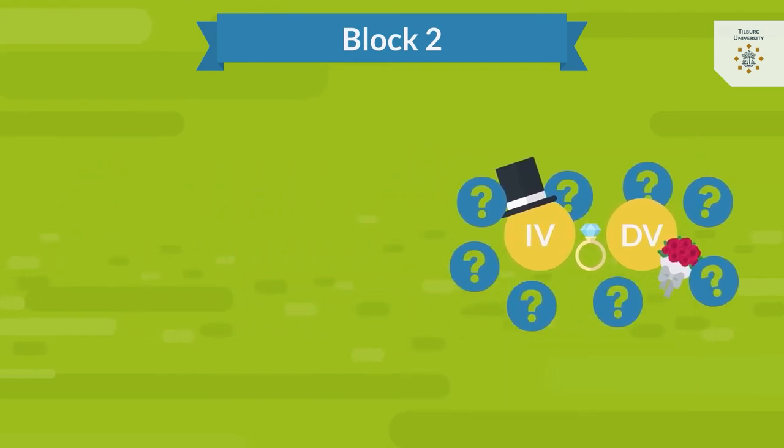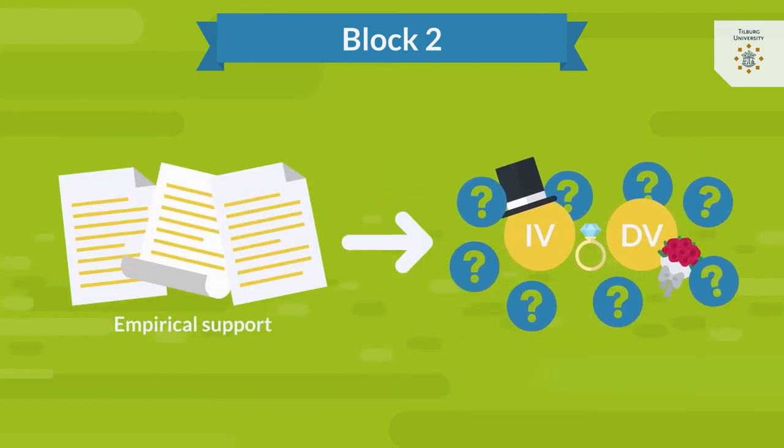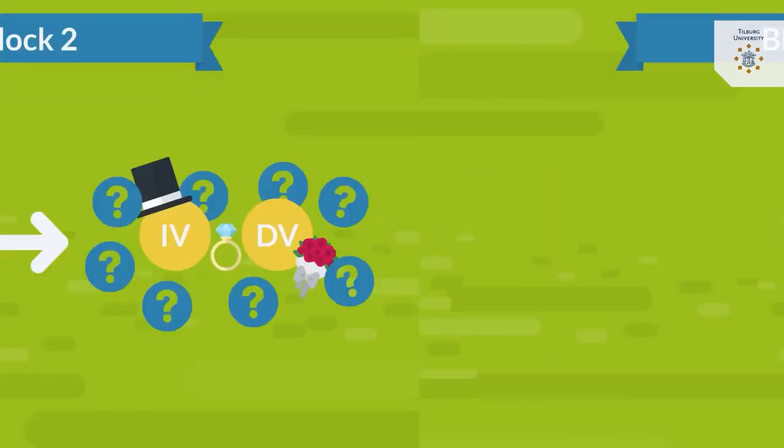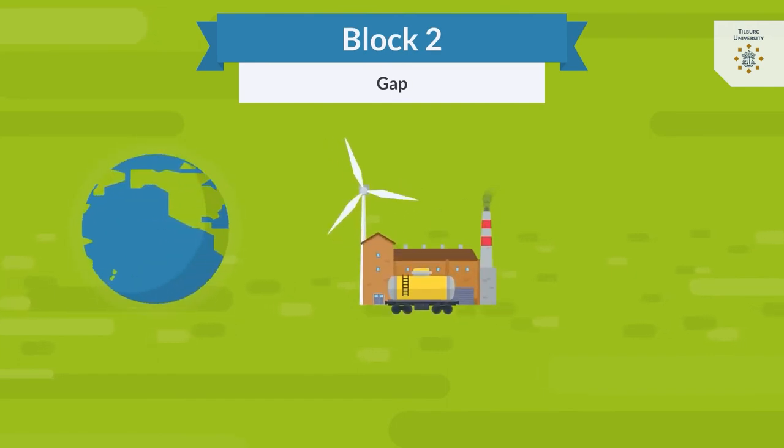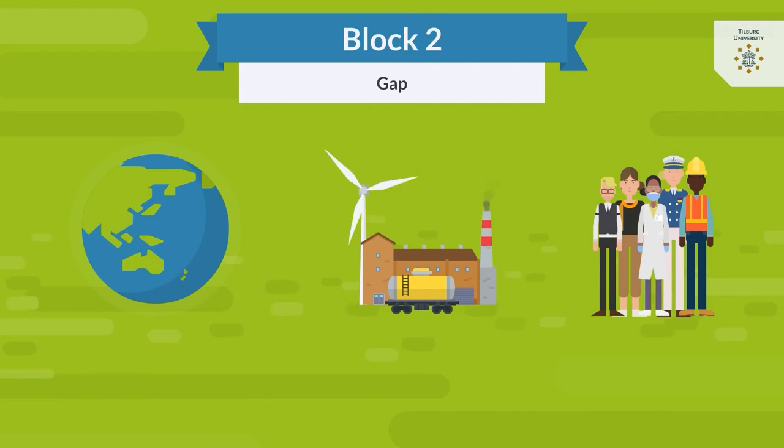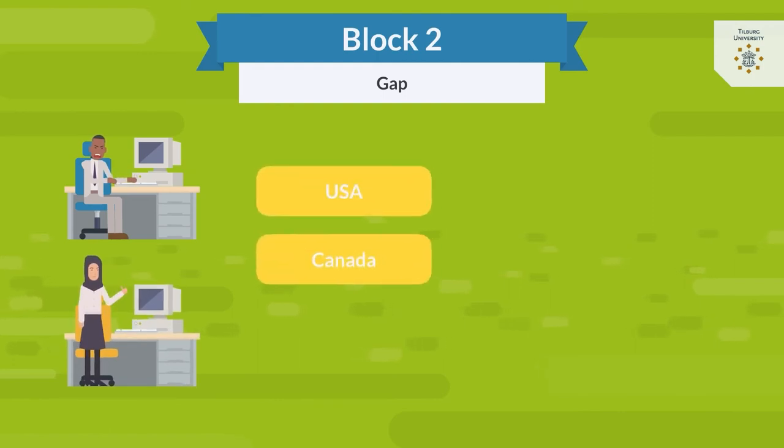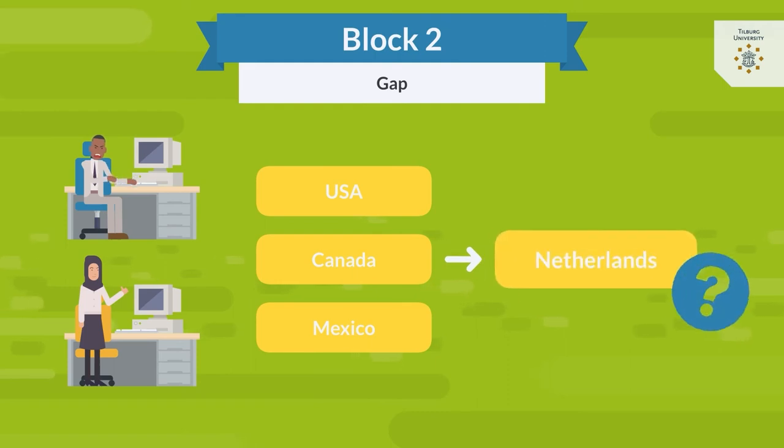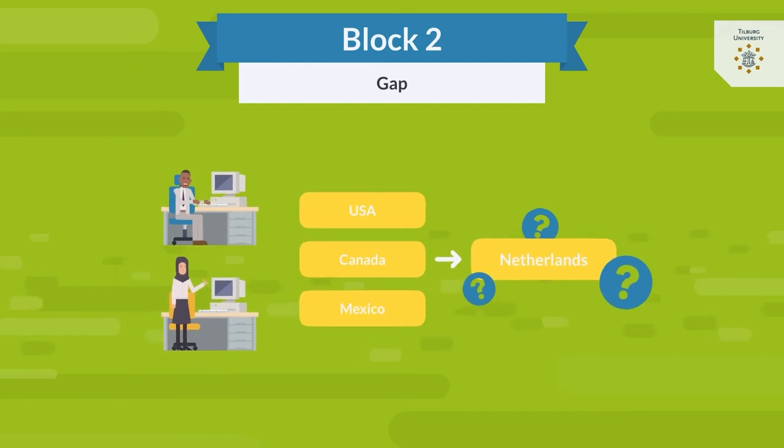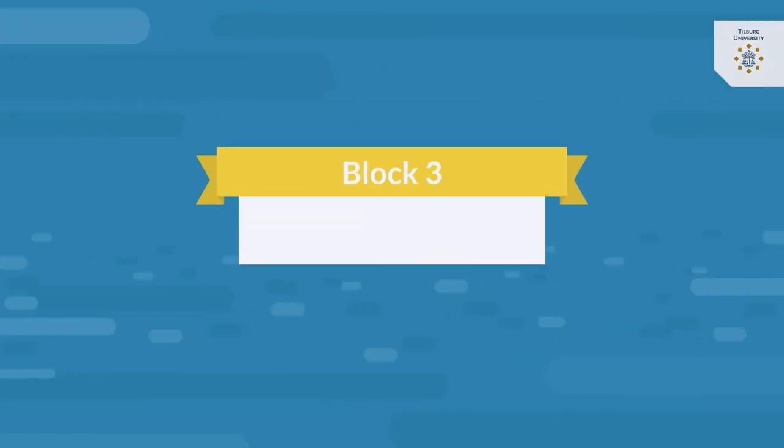Next, you present empirical support for the relationship between your variables, as well as the gap in research you want to address. A gap can be anything, but for the current paper, we recommend you focus on a specific country, sector, or target group. For example, you may refer to empirical papers that found a relationship between workload and job satisfaction in the USA, Canada, and Mexico, and consequently argue that this relationship has not been studied in the Netherlands. So this is your gap and is therefore your contribution to the scholarly literature.